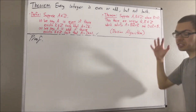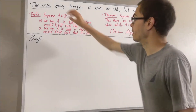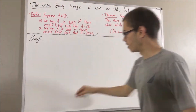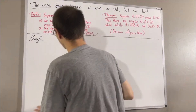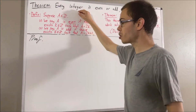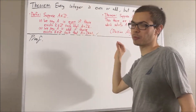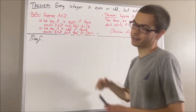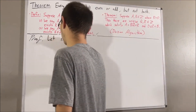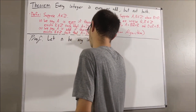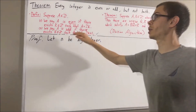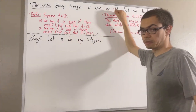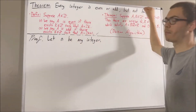Now let's get into proving this theorem. Since we're trying to prove a statement about every integer, let's give ourselves an arbitrary integer — I'll call it n. The whole goal is to show that n is even or odd, but not both.